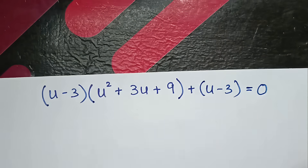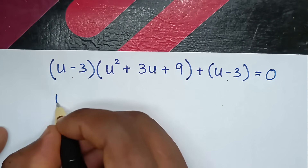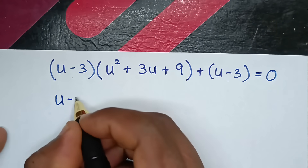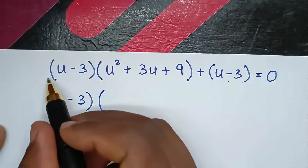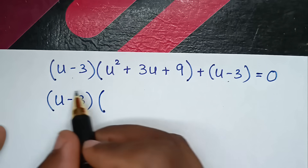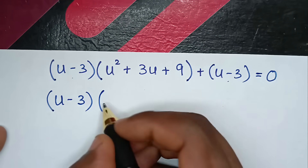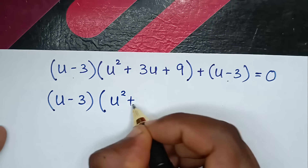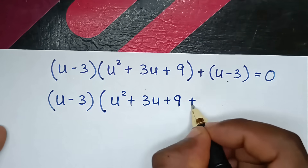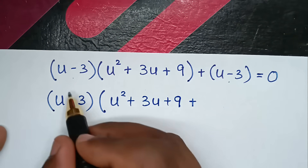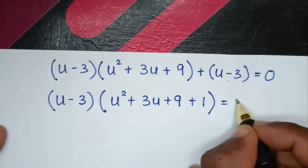From here, (u - 3) is common, so we factor it out. Dividing through gives (u - 3)(u² + 3u + 9 + 1) = 0, which simplifies to (u - 3)(u² + 3u + 10) = 0.